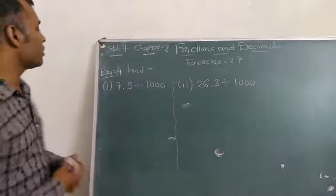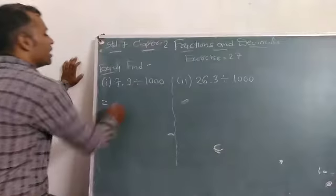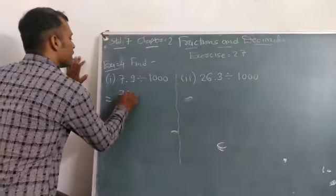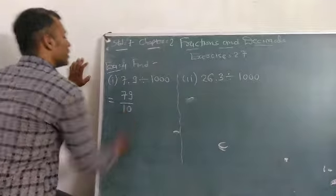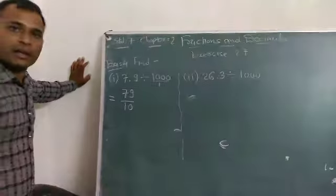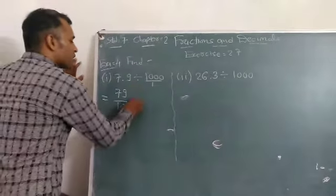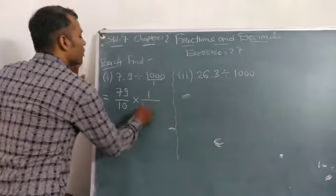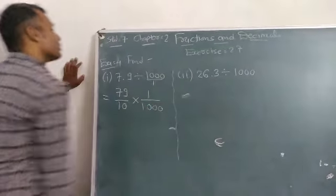Okay, now, first example is 7.9 divided by 1000. 7.9 means 79 upon 10. 1000 has 1 in denominator. So now, division symbol is converted into multiplication. Then we convert at 1 upon 1000.